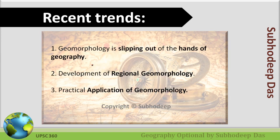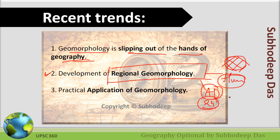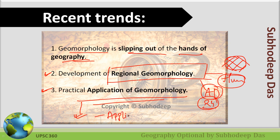The recent trend is that geomorphology is slipping out of the hand of geography, as we have already discussed. Second, there is a development of regional geography — whenever we used to read geography, we used to analyze it on a regional aspect. We also apply geomorphological knowledge in various aspects, and this point can be explained through the last chapter of geomorphology, which is applied geomorphology. Stay tuned till that class.